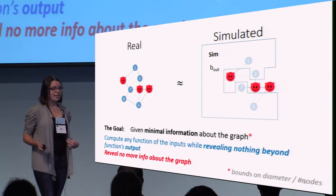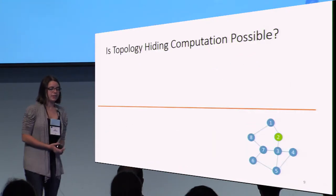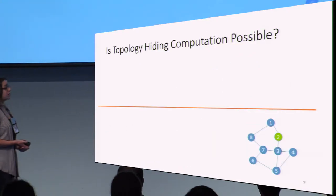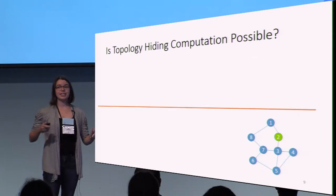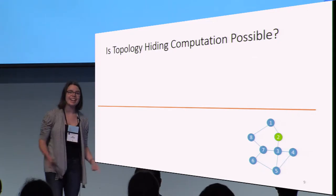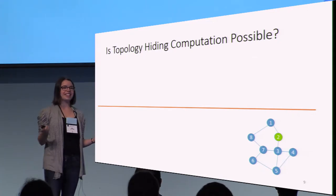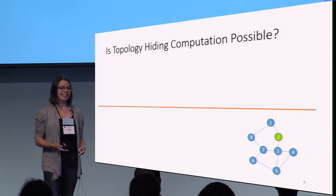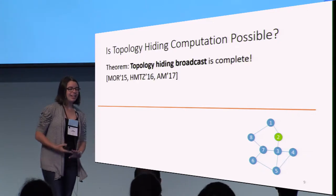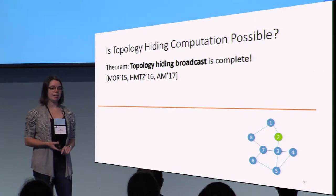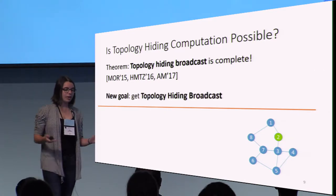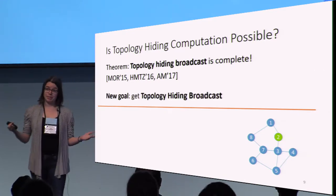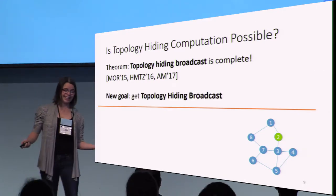Okay, this seems difficult. Is this even possible? Well, it turns out instead of having to prove that we can get any function at all in this model, it's enough to prove that we can get topology hiding broadcast. So our goal is going to be to get broadcast.